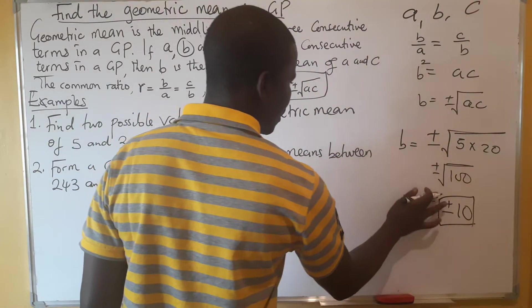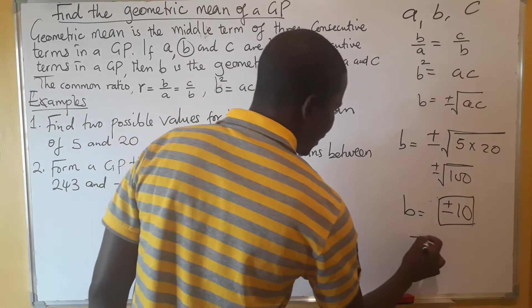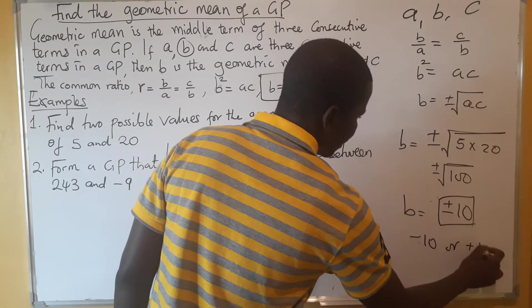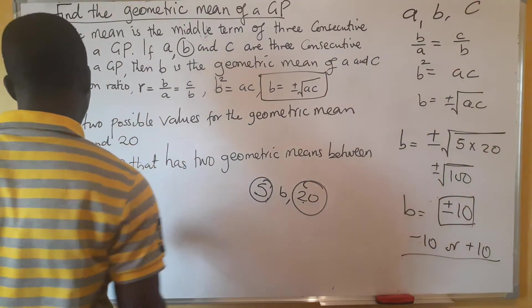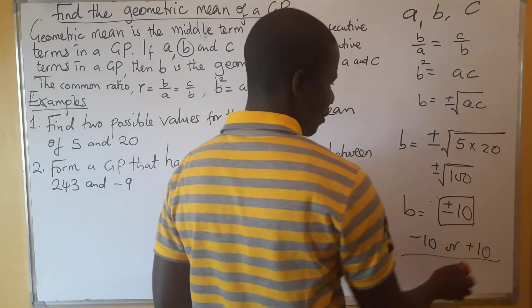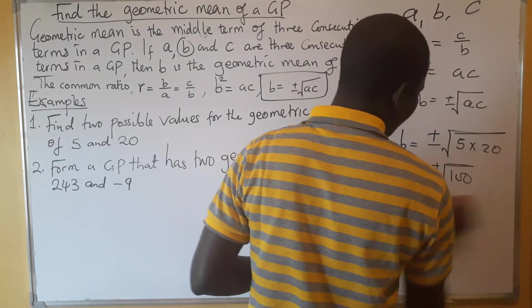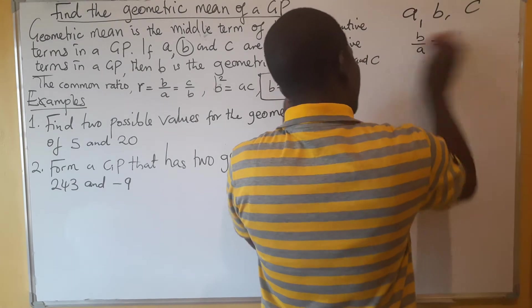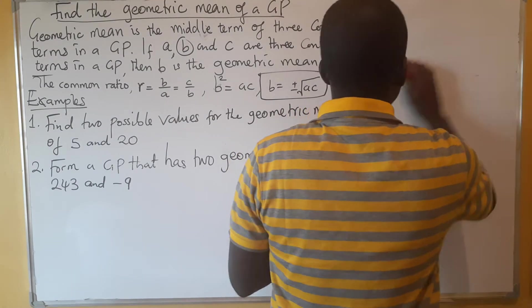Which is going to be plus or minus 10. So those two values that we are referring to for the geometric mean are negative 10 or positive 10. These are the two possible values that we are looking at for the first one. Please take note of that.